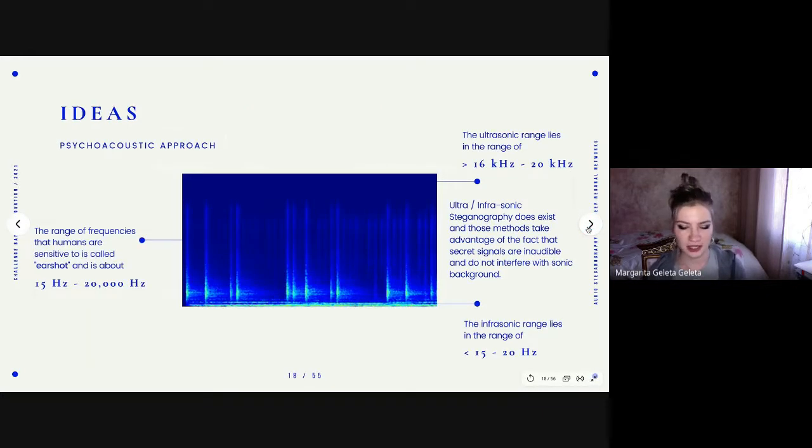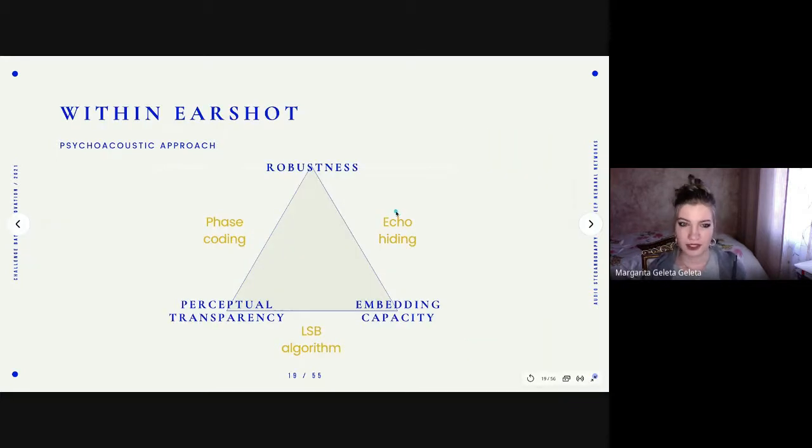Using this kind of representations, researchers thought that we could use the ultrasonic range and infrasonic ranges to hide information because these are the ranges where ears are insensitive to. And actually, ultra and infrasonic steganography does exist, but it's sometimes not appropriate because not all devices are capable of transmitting or capturing these sounds. So we will focus on steganography within earshot.